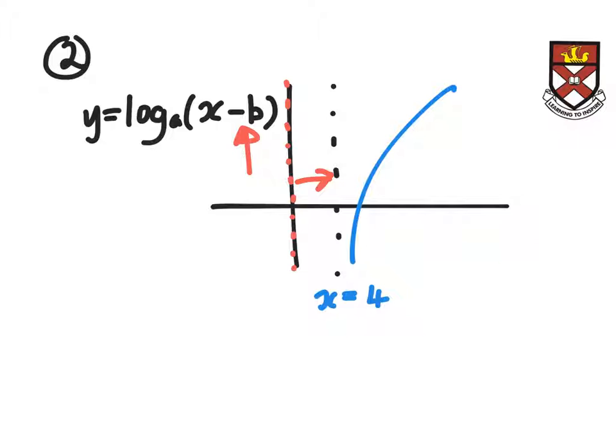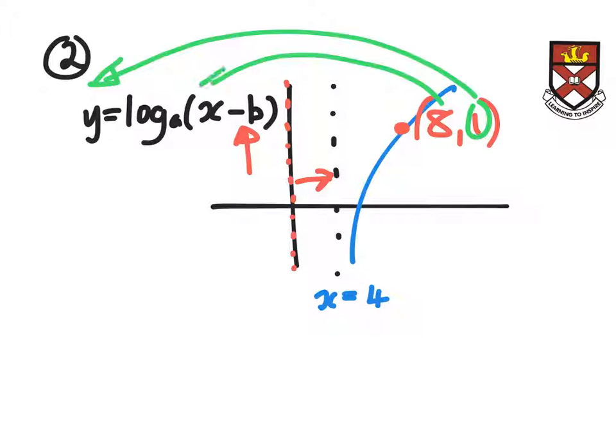Also, you're told in the question that you've got this point along here, which is at 8, 1. So we're going to substitute the number 1 in for the y coordinate, and we're going to substitute the number 8 in for the x coordinate. So we're going to have 1 equals log to the base a of 8 take away whatever you found the b value to be. And then you just solve that little equation. It should be easy to solve because with this answer being 1, we're trying to get these two numbers here the same.